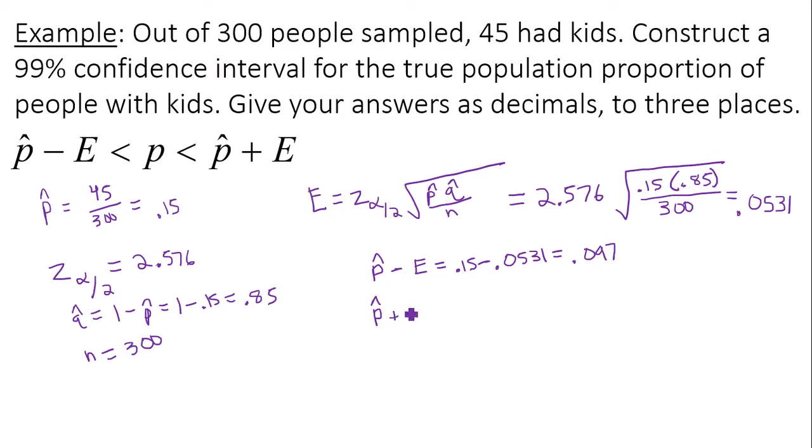Then I have p hat plus E, which is 0.15 plus 0.0531. And this is going to give me about 0.203.